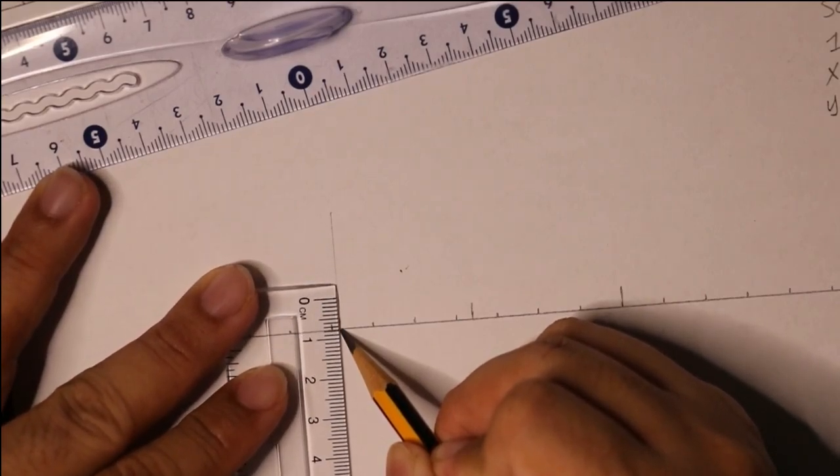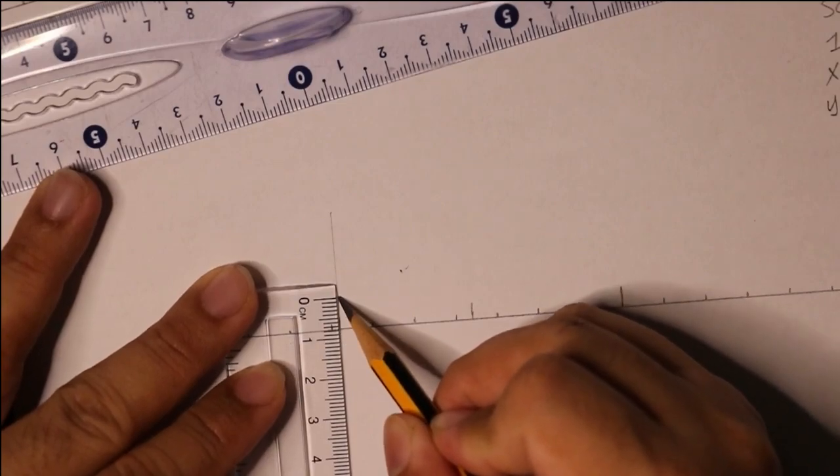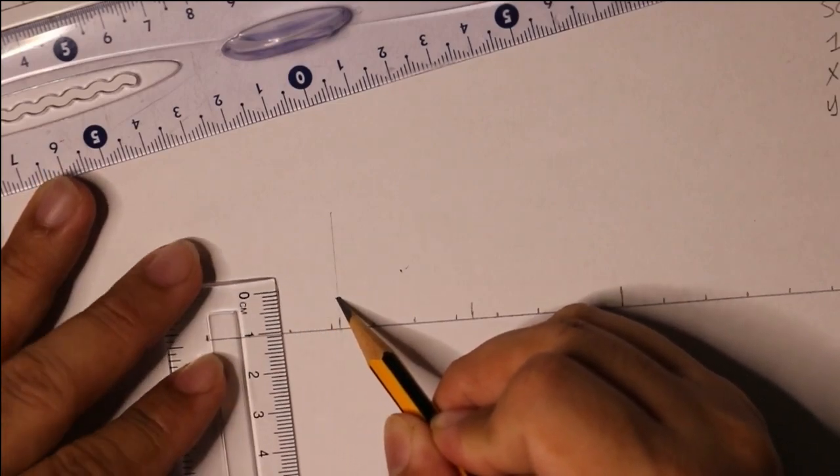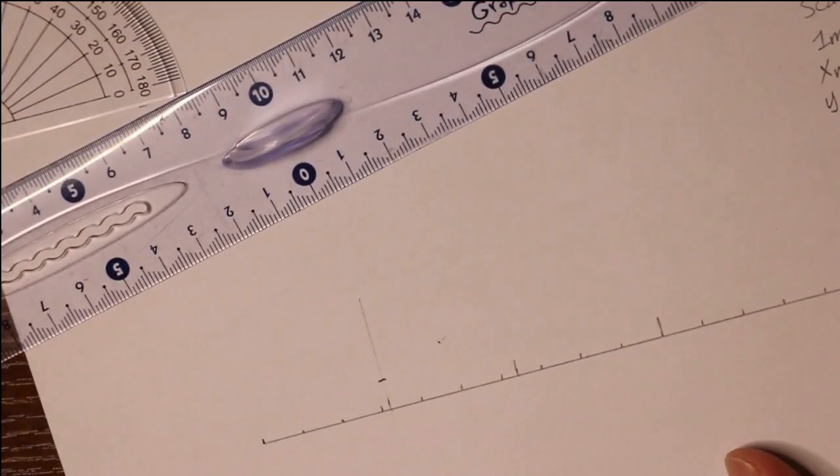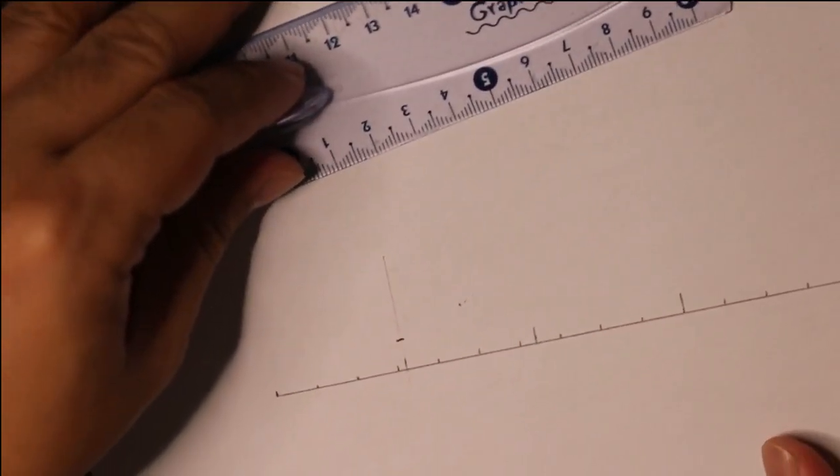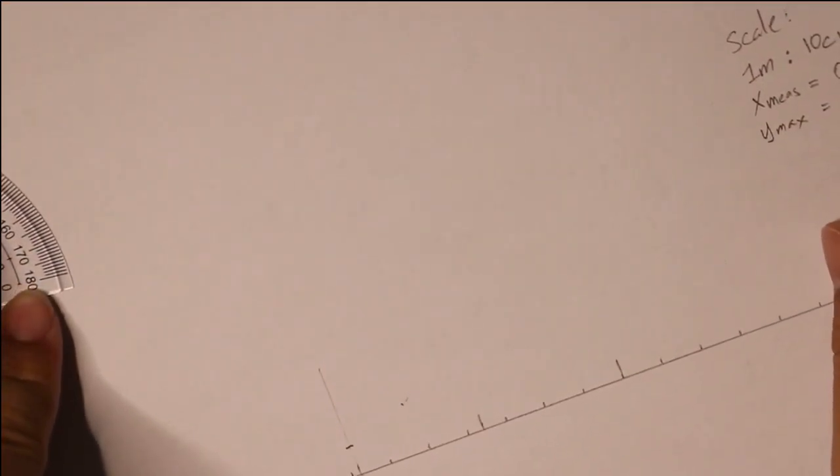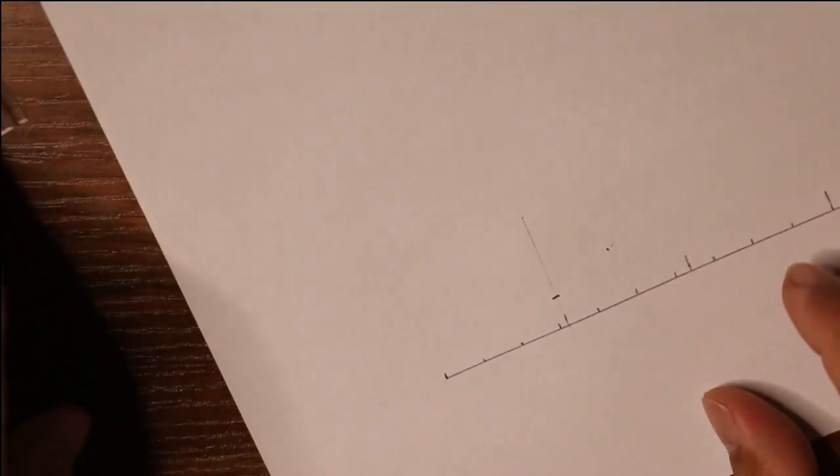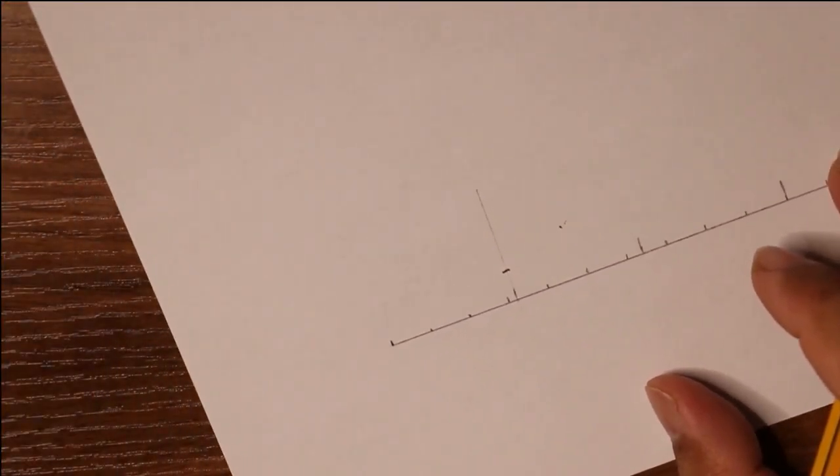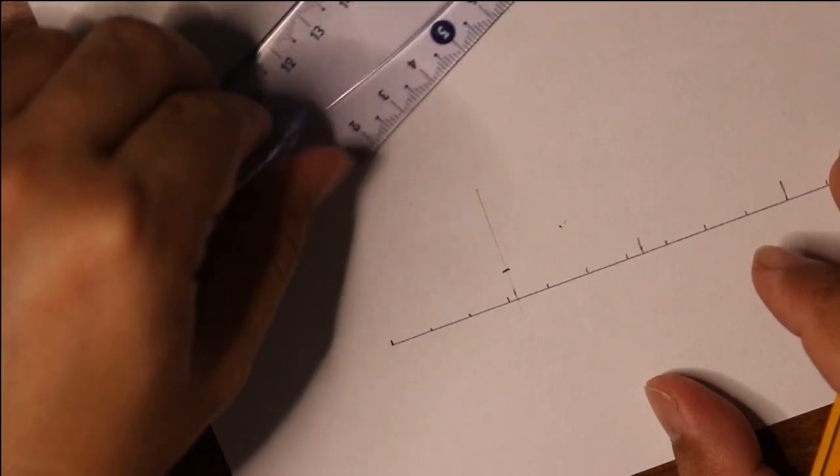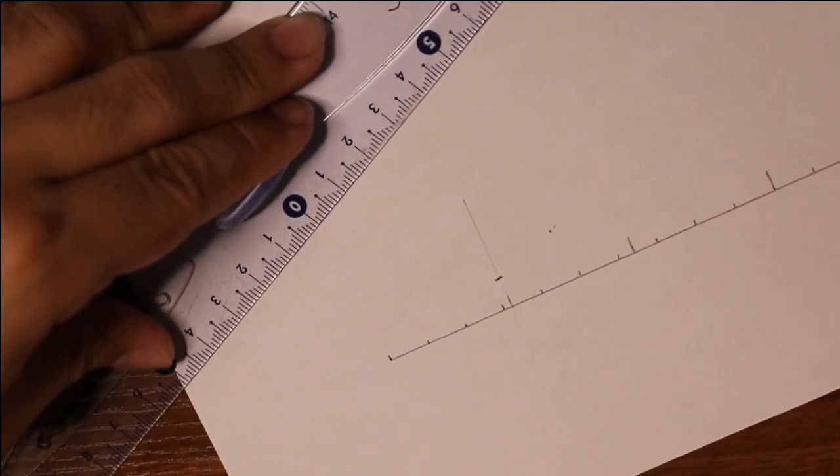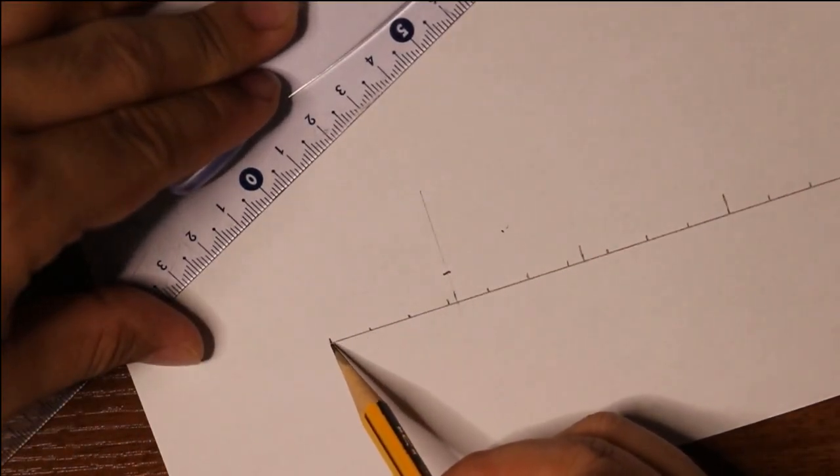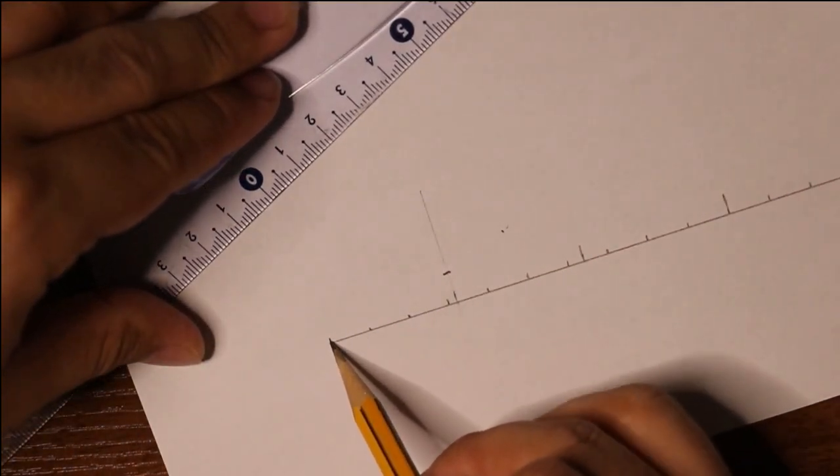Now it's time to draw the trajectory. How do you do that? If you have a french curve you can use it, but if you don't have one you can just use your hand. The technique is: first place the pencil on the launching position.